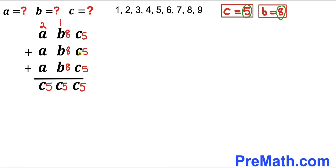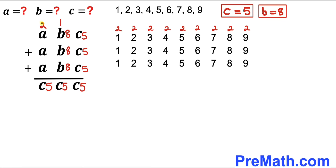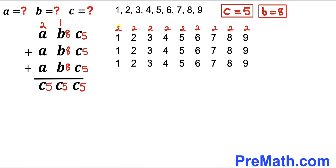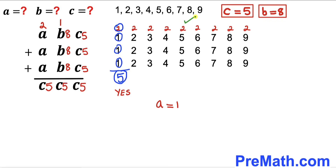Now we figure out A. With a carry of 2, we add 2+A+A+A and need the result to equal 5. Testing A=1: 2+1+1+1=5, and 5=5 — so A=1 works! Let's check other values to confirm it's the only option. A=2 gives 2+2+2+2=8, and 8≠5.